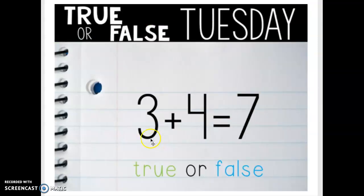First I have 3 plus 4 equals 7. Let's see if this is true or if it is false. So I'm going to draw pictures and use dots to help me. So first I need to represent the number 3. 1, 2, 3.